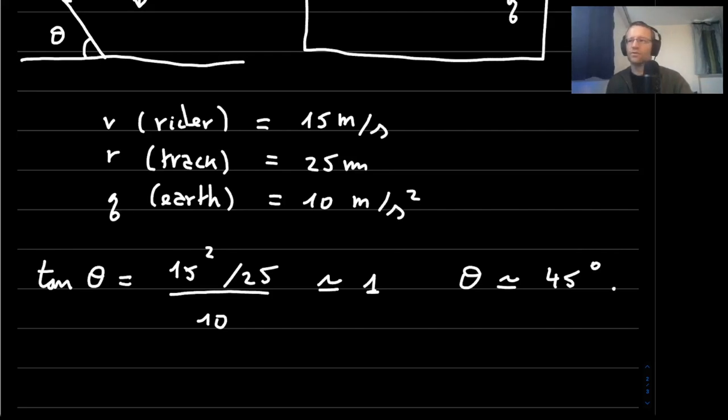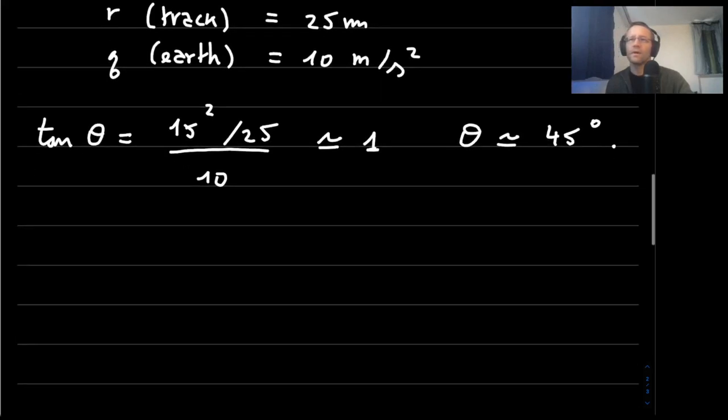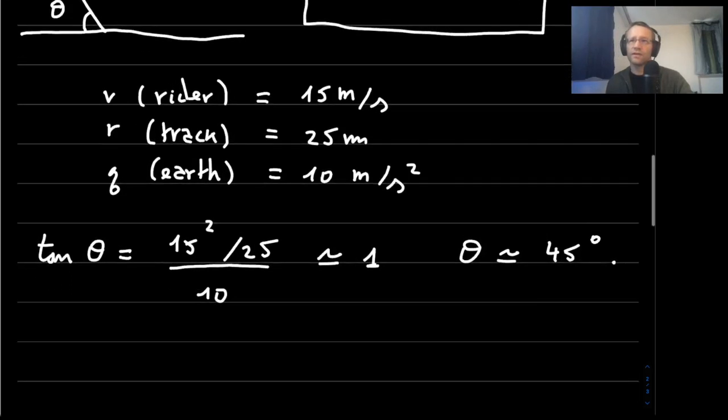These are crude approximations. So we want our track to be tilted.